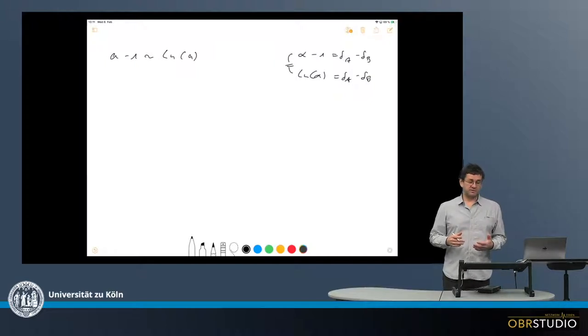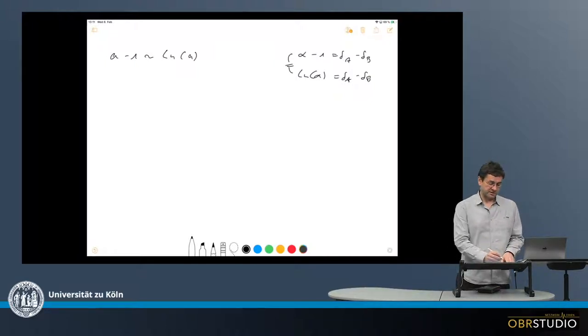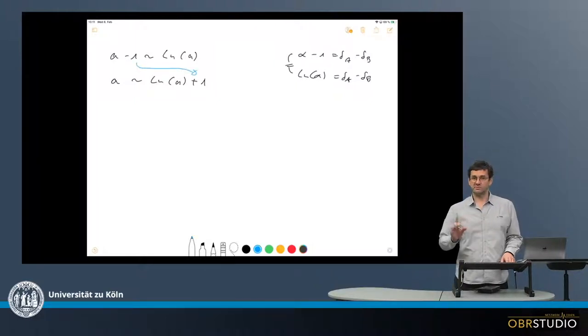But even more, sometimes this approximation is written differently. Like, for example, A is about the same as the natural logarithm of A plus 1. And in this case, this seems quite fine because 1 was just moved to the other side.